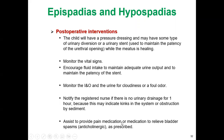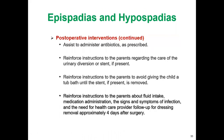Assist in providing pain medication or medication to relieve bladder spasm. Anticholinergics can help. The most important nursing care priorities are pain control, anticholinergics for bladder spasm, and catheter care. Postoperatively, assist in administering antibiotics as prescribed. Reinforce instructions to parents regarding care of urinary diversion or stent, and instruct parents to avoid giving the child a tub bath until the stent, if present, is removed.